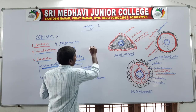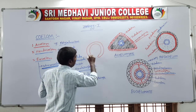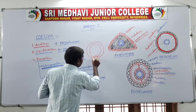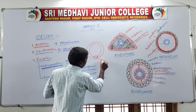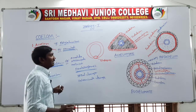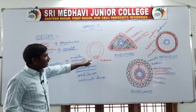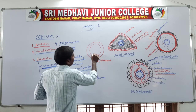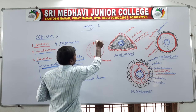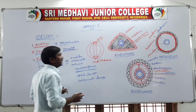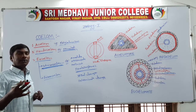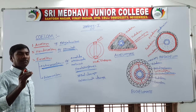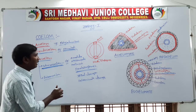Protostomes: in the embryonic stage, the blastopore forms the first mouth. The blastopore forms the mouth first, and then the anus is formed second. 'Protero' means first, 'stoma' means mouth. So the blastopore forms the mouth first in the embryonic stage. These organisms are called protostomes.